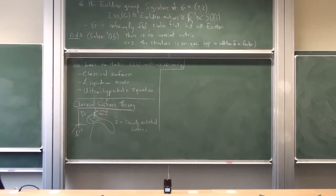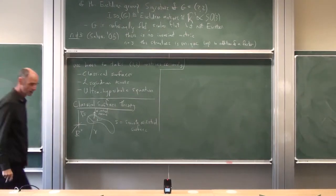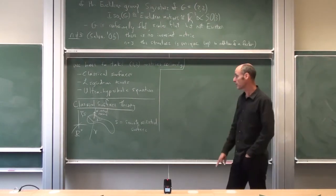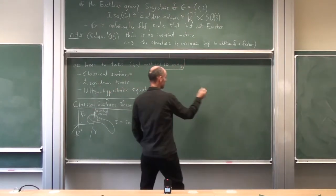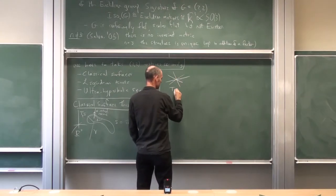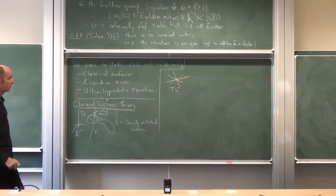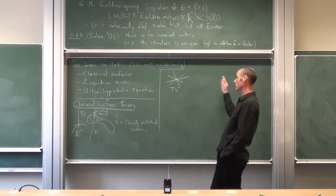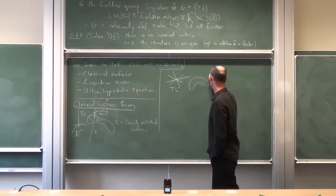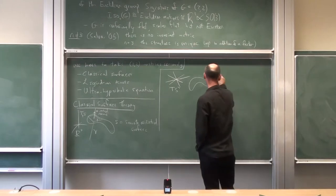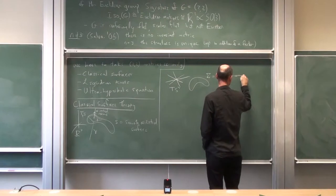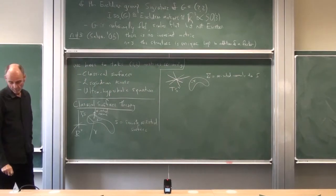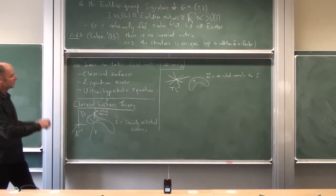Every oriented line is a point in this four-dimensional space TS². So every point on this surface has an oriented normal, and every oriented normal gives you a point. What you end up with is a surface Σ in TS² — the surface of oriented normals. We have this four-dimensional space TS², also written as L(R³), the space of oriented lines for R³, identified with TS² by a natural identification.